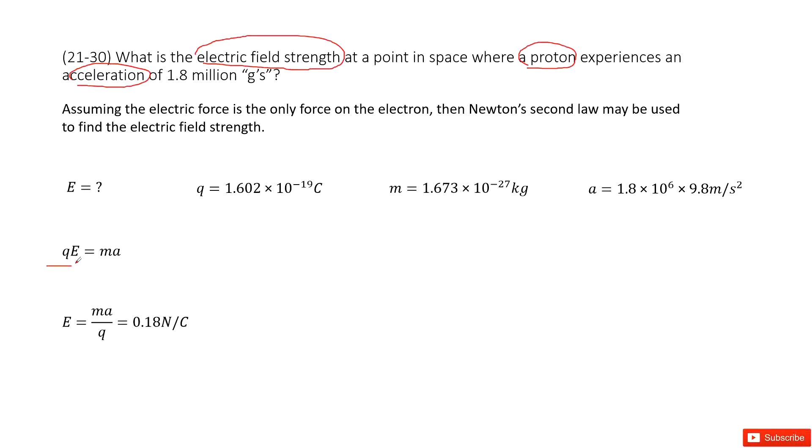Now we can look at this equation. E is the quantity we are interested in and q is the given quantity. Because it tells you this is a proton. As we know, proton carries one positive charge, one positive fundamental charge.